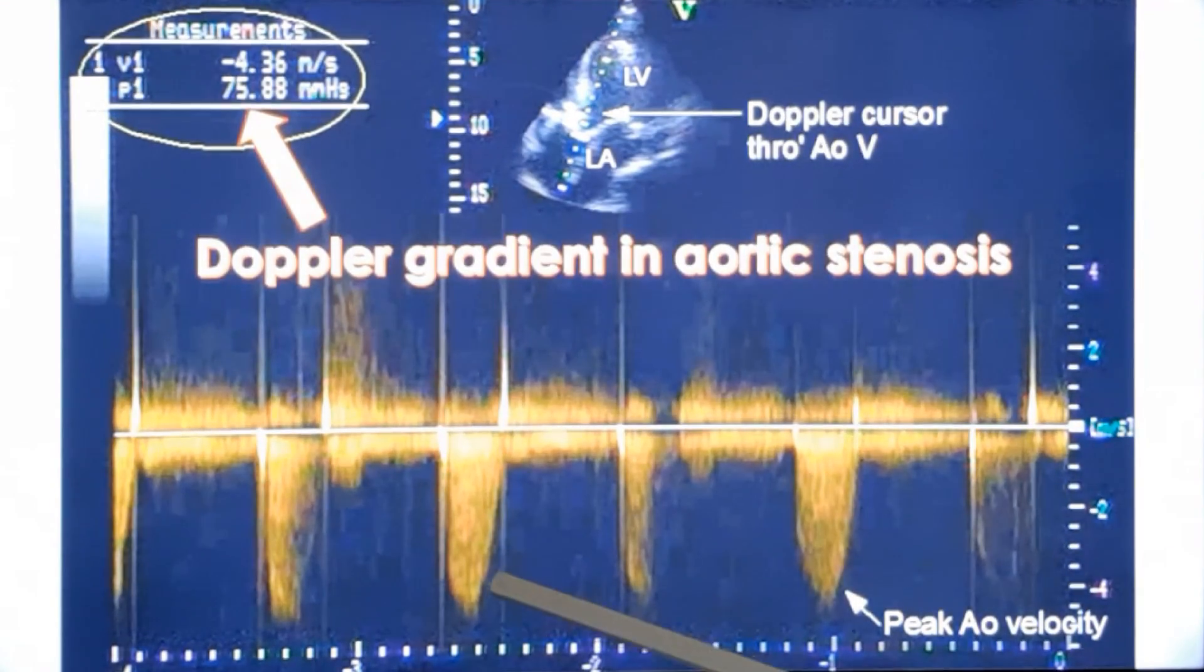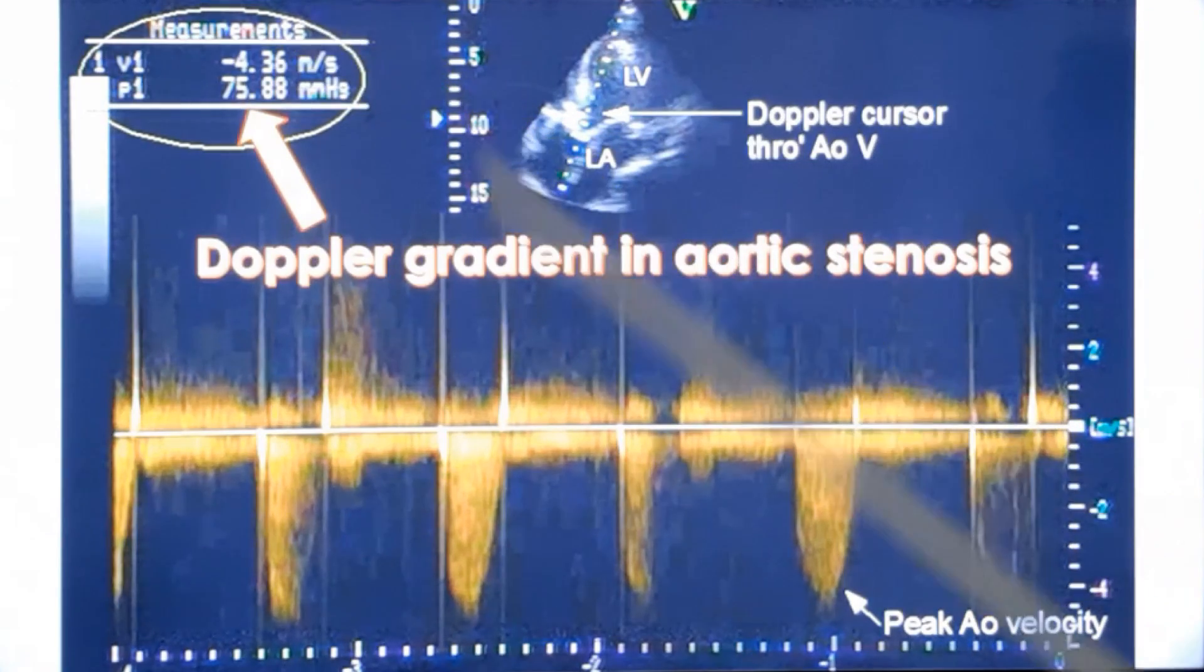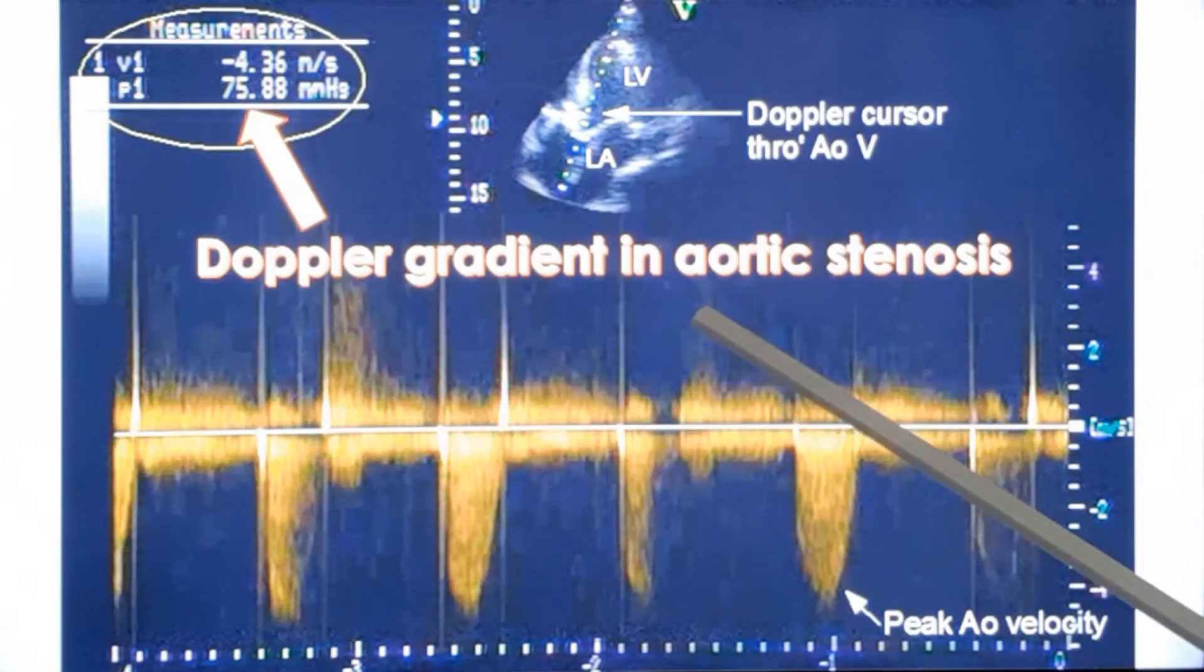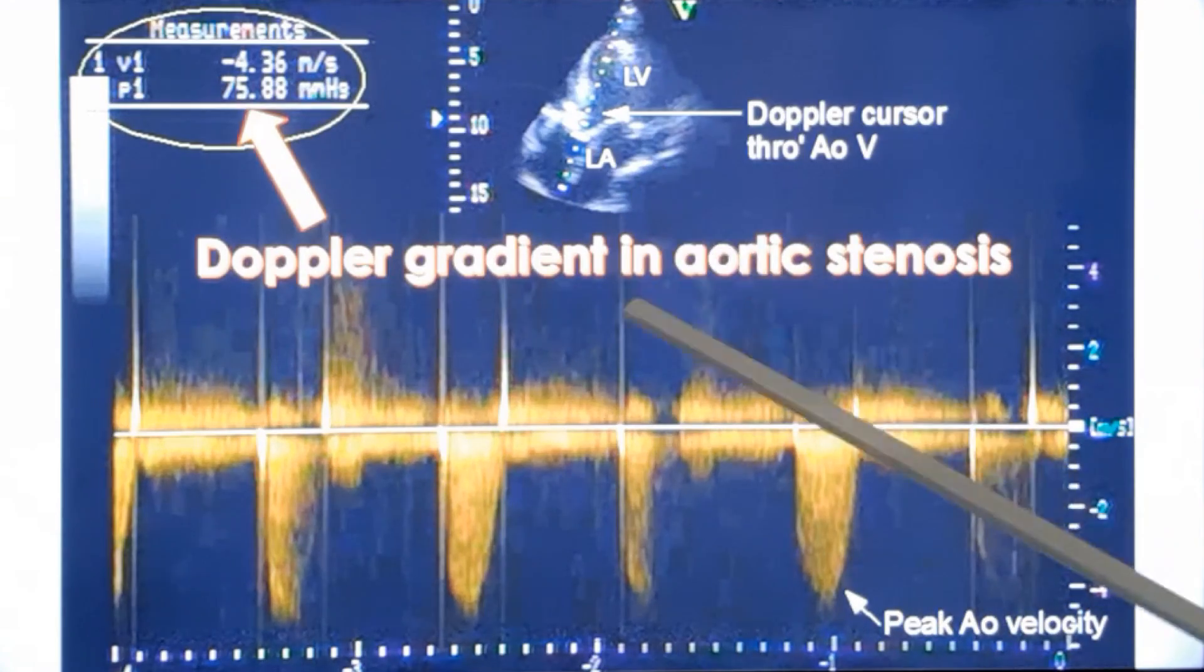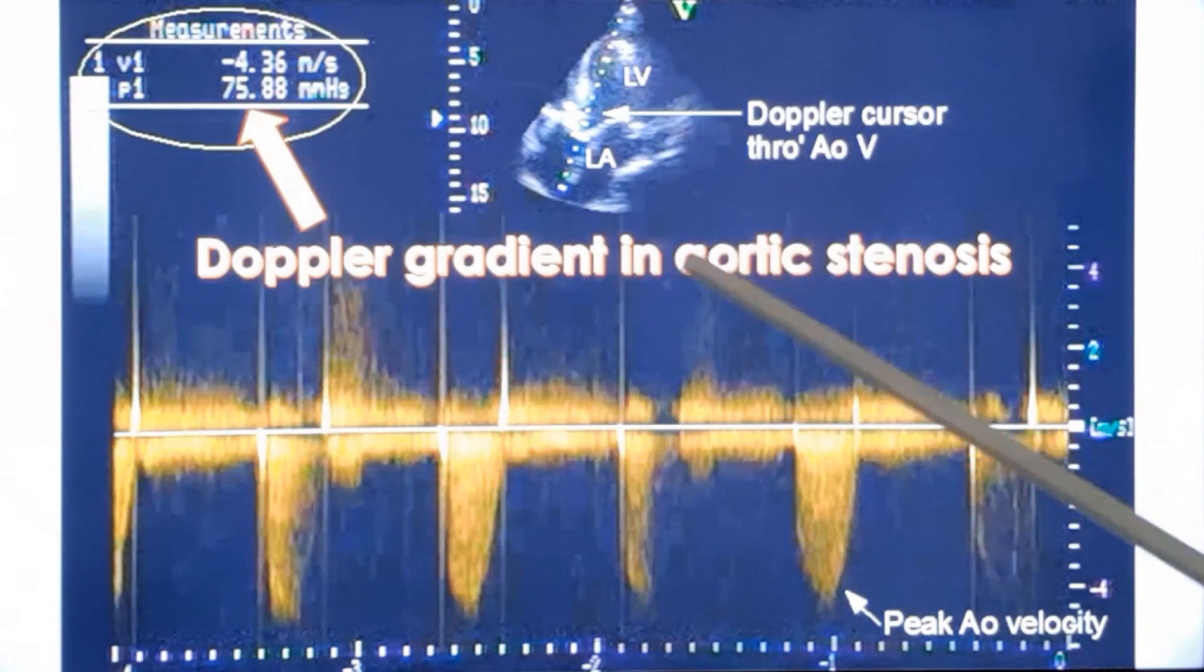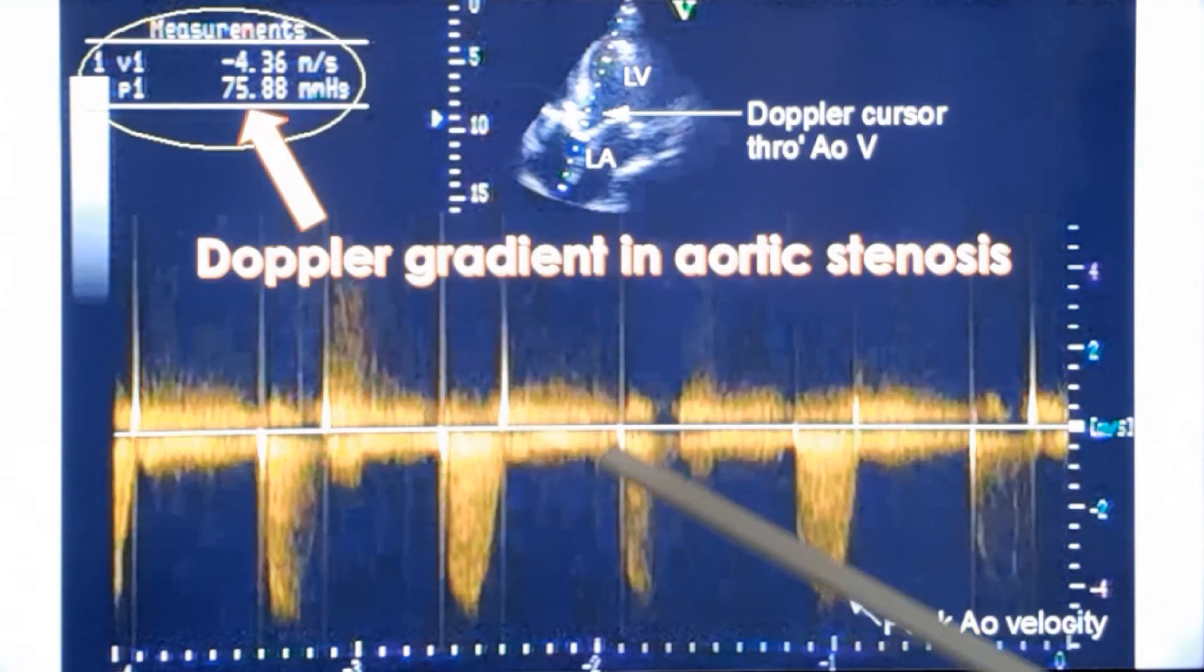As I mentioned earlier, this is the peak instantaneous gradient calculated from the peak aortic velocity. Aortic velocity is shown here, and by the formula 4v squared, you get the peak gradient. But here you don't have to calculate. The echocardiograph calculates it for you once you show the peak velocity to the machine.